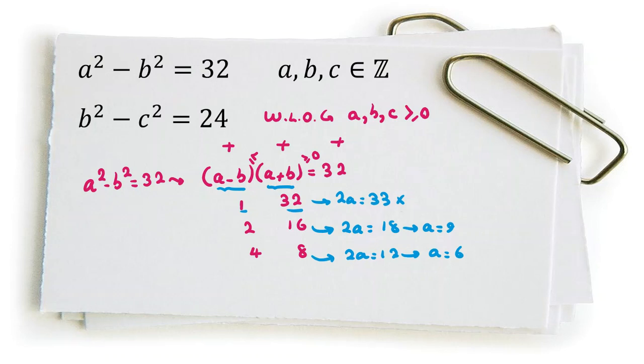And here, because a equals 9, we know 9 plus what is 16? 9 plus 7. So b is 7 here. In the next case, a is 6. 6 plus what is 8? 6 plus 2. So b is 2.